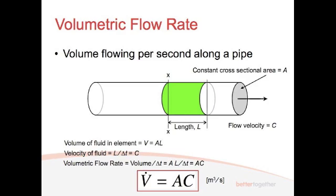Some of you may be familiar with the dot notation — it essentially means it's the first derivative with time. So if you have x, then x dot is velocity and x double dot is your acceleration. So here we're using that notation: V dot equals AC. This is the volumetric flow rate. And as you can see, there's an inverse relationship between the area and the velocity — when the area goes up, the velocity goes down, and vice versa.